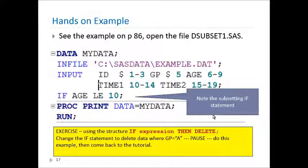Let's do a hands-on exercise. This is on page 86. Open the file called dsubset1.sas. This is the file here. Note that there is a statement in here, if age less than 10. So when you run this program, you're going to see the resulting proc print is going to give you the data set with all the data in it that matches age less than 10. That's the only data that remains in the resulting data set called myData.